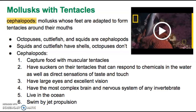The last phyla of mollusks are cephalopods — our mollusks with tentacles. They have tentacles in place of a muscular foot, and those tentacles actually surround their mouth at the front of the organism. Octopi, cuttlefish, and squids are all examples of cephalopods. Squids and cuttlefish have shells like most mollusks, but octopi do not — similar to slugs among gastropods. All cephalopods capture food using muscular tentacles. On those tentacles are sensitive suckers that can respond to chemical signals in the water, as well as sensations of taste and touch — all through that one structure.